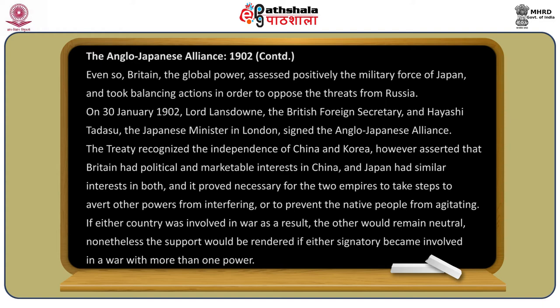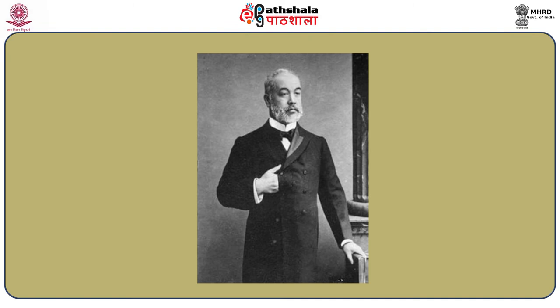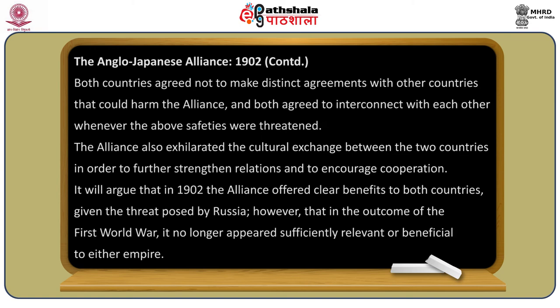The treaty recognized the independence of China and Korea, but asserted that Britain had political and commercial interests in China and Japan had similar interests in both. It proved necessary for the two empires to take steps to avoid other powers from interfering or to prevent native peoples from agitating. If either country was involved in war, the other would remain neutral; nonetheless, support would be rendered if either signatory became involved in a war with more than one power. Both countries agreed not to make separate agreements with other countries that could harm the alliance.